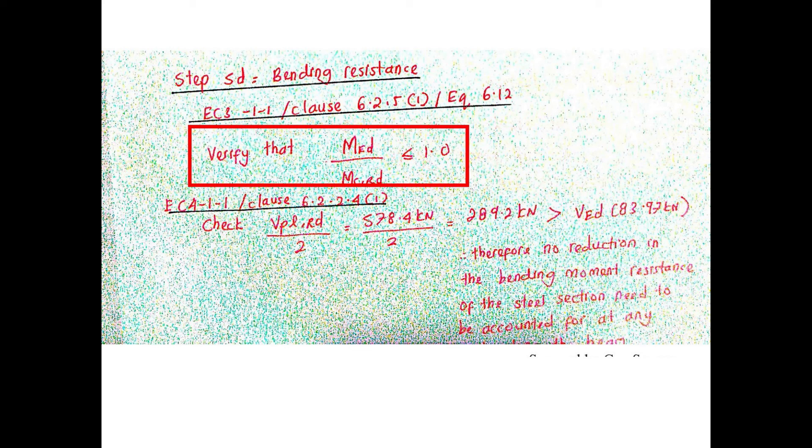In which, the ratio of the maximum design moment over the moment capacity must be less than 1. It is also highlighted in EC4, clause 6.2.2.1(1).